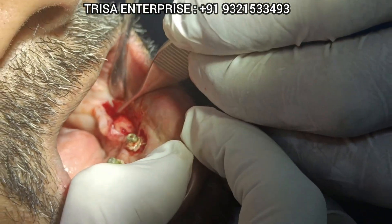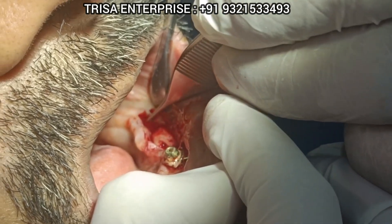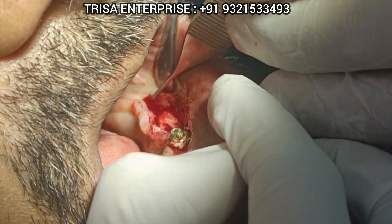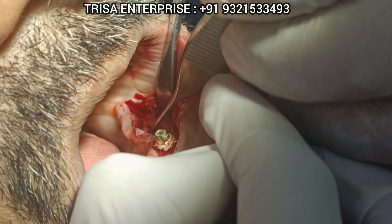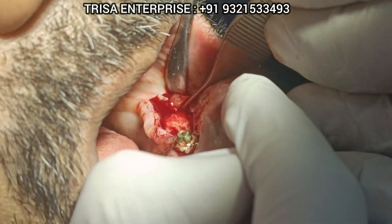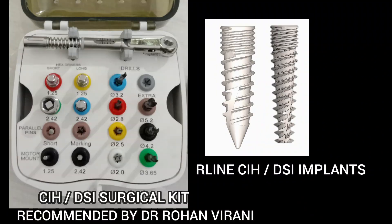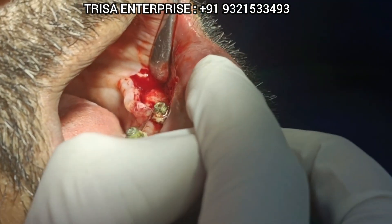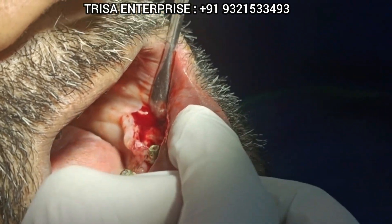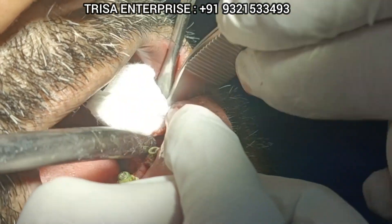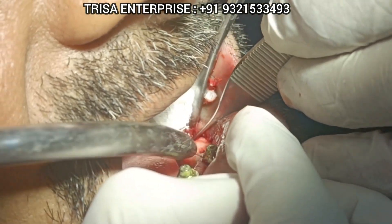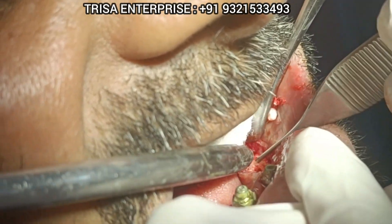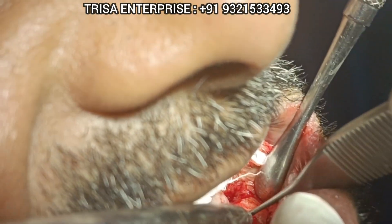For the sake of saving time, I have already reflected the flap. You can see the incision here and two vertical releasing incisions. This is the first rarefaction zone which I showed you on the OPG. This is the second rarefaction zone — and this is the area on the OPG where I want to work.